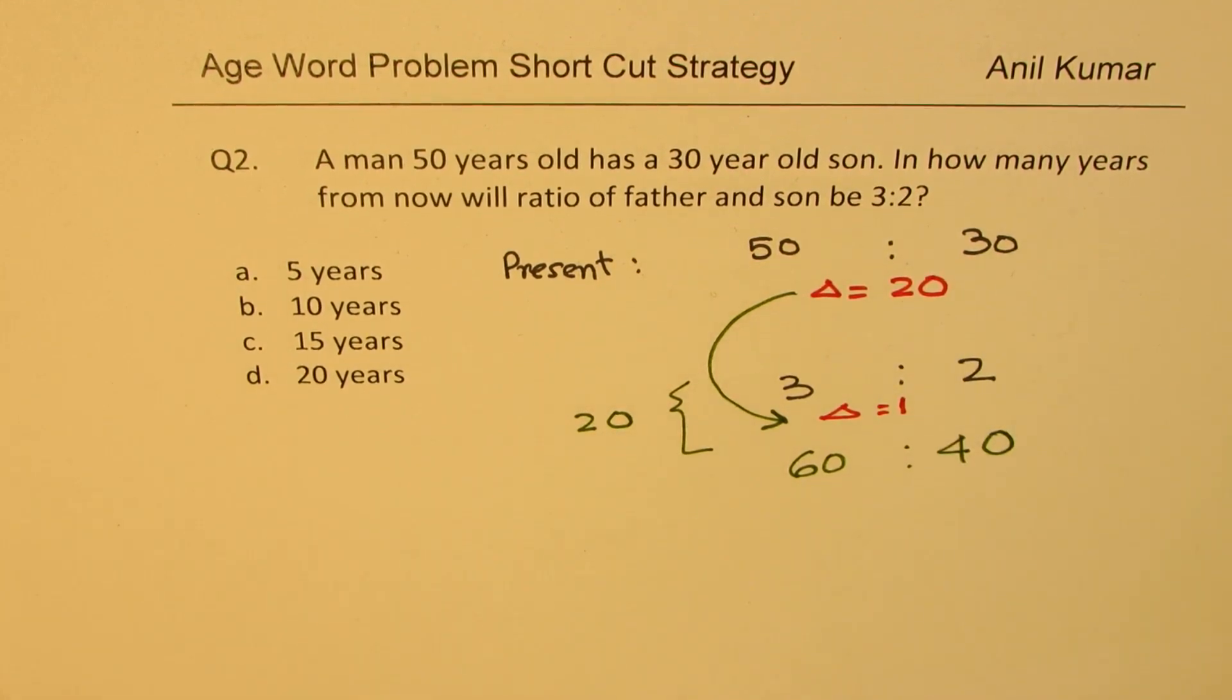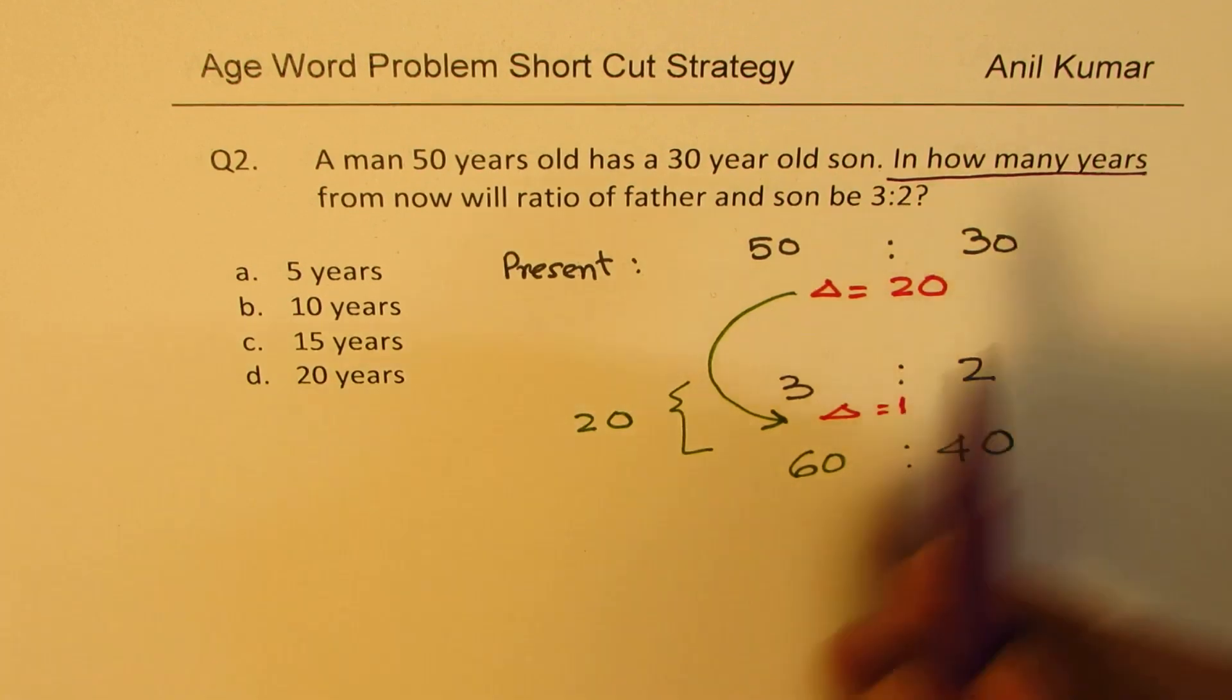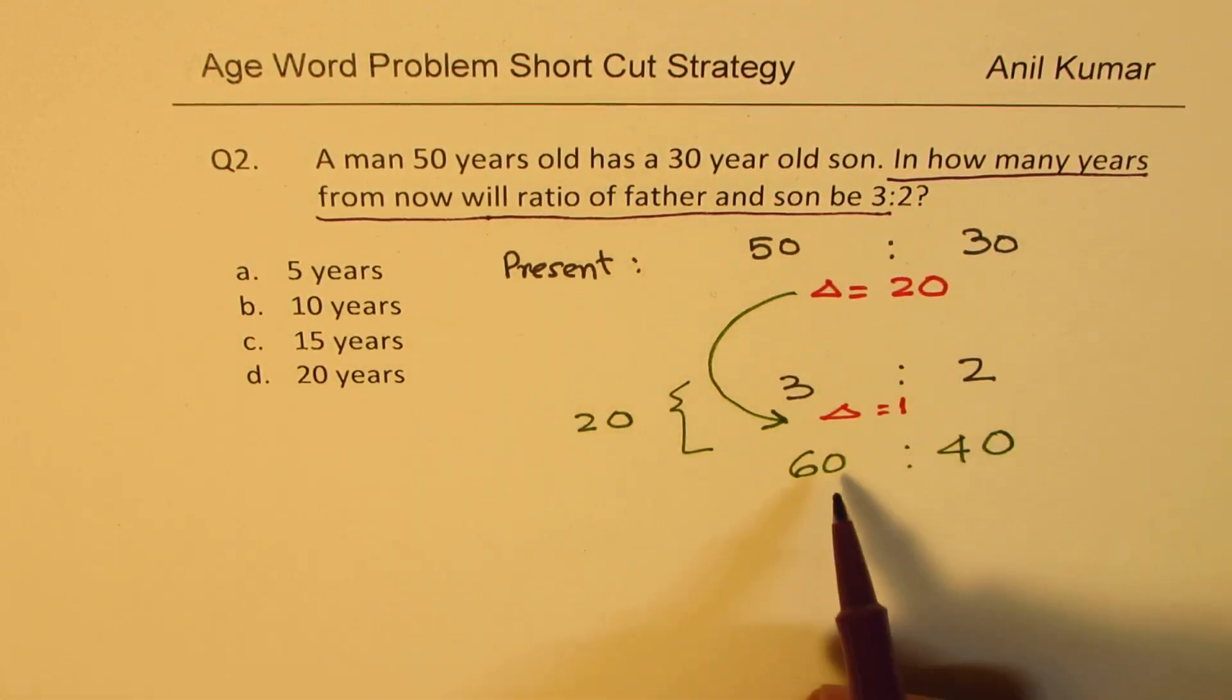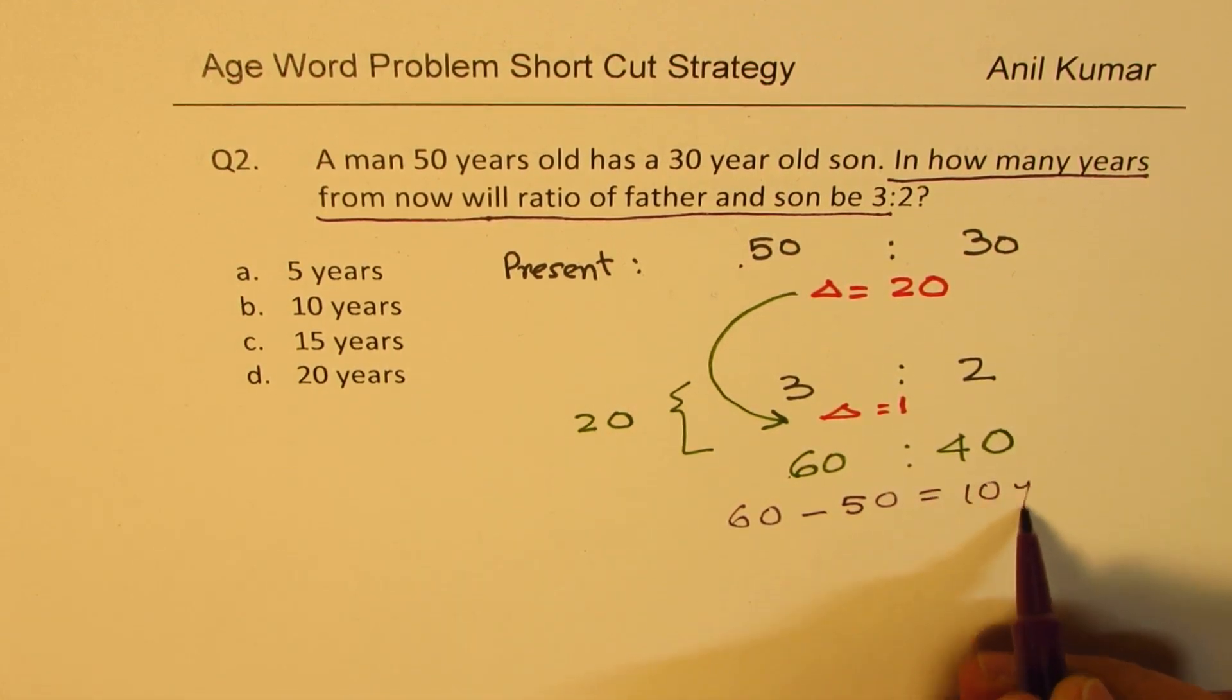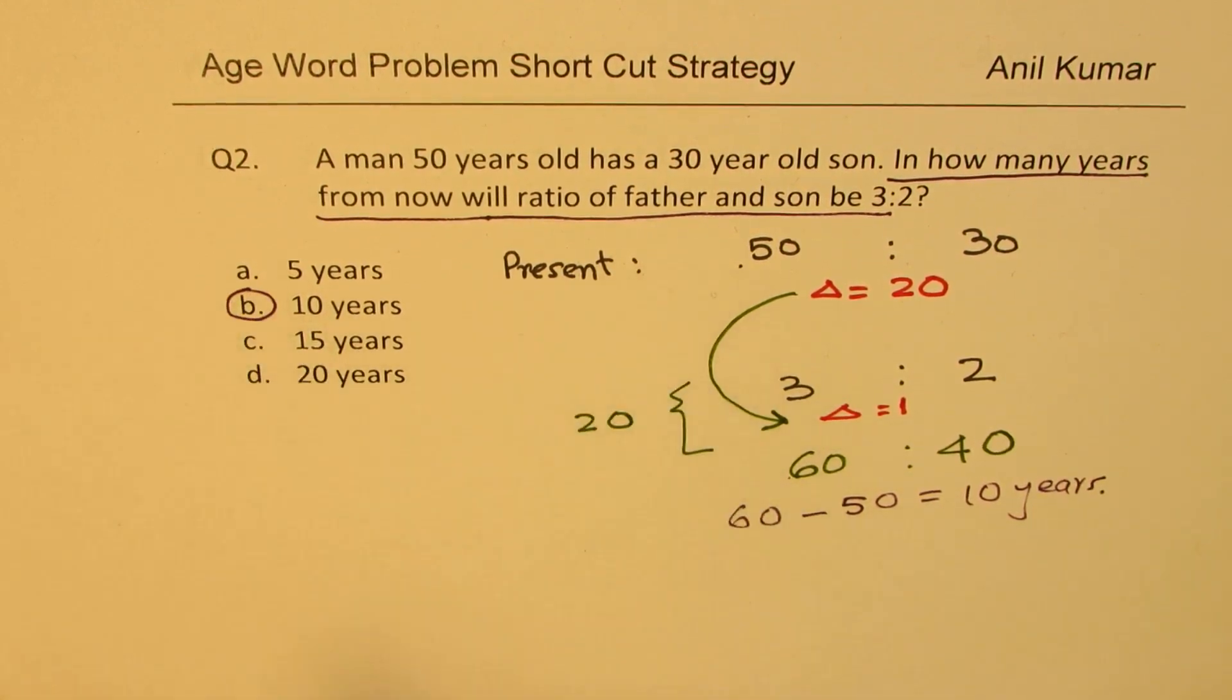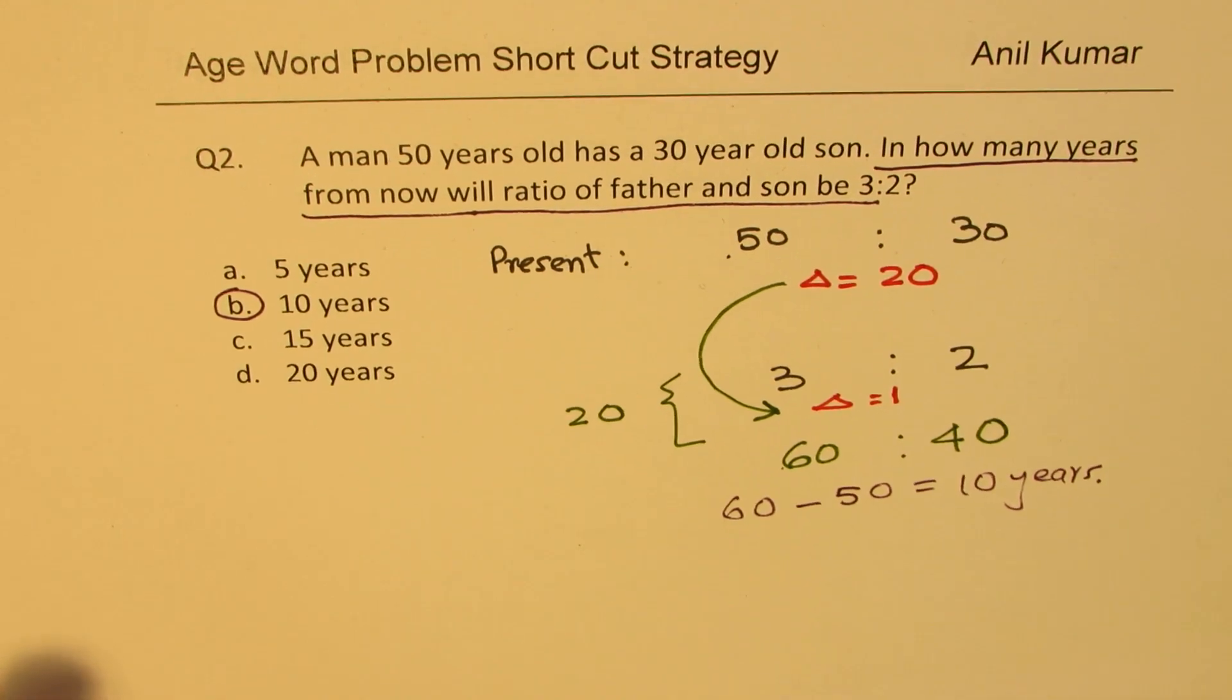Now the question was: in how many years from now will the ratio be this? This is also 3 is to 2. In how many years? Find the difference in how many years. Now the father is 60 years old, in future. And present is 50. So the difference is 10 years. So the option of 10 years is correct. So 10 years from now, father is going to be 60 years, son will be 40 years, their ratio will be 3 is to 2. Now in just a few seconds, you can always answer such a question.